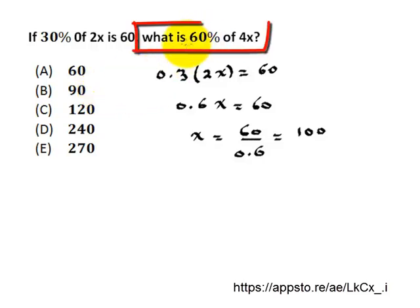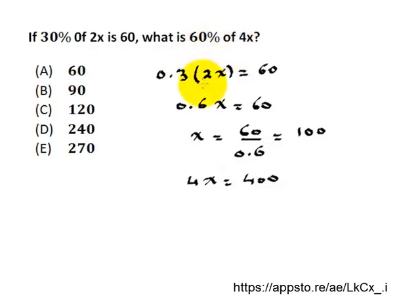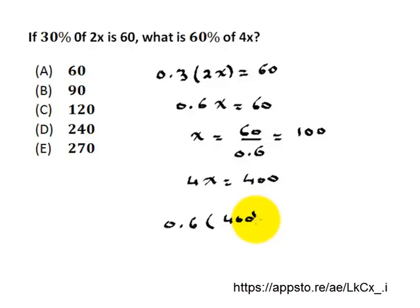They are asking: what is 60% of 4x? Now x is equal to 100, so 4x is equal to 400. Then we need to find 60% of 4x — so 60%, which is 0.6, times 4x, which is 400 — which equals 240.